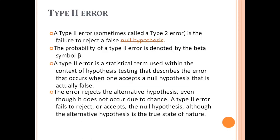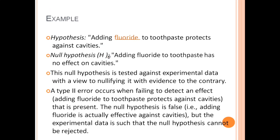The Type 1 error example: the shepherd says there is a wolf but actually there is no wolf — false positive. The Type 2 error example: fluoride toothpaste actually protects against cavities but with the data available we are saying it doesn't — false negative. So that is Type 1 and Type 2 error — a tricky part of research.